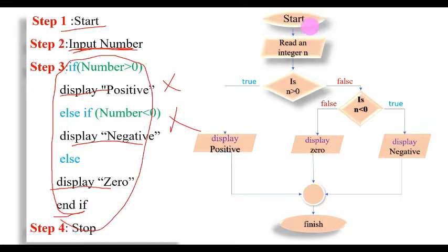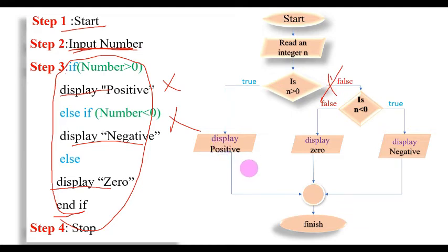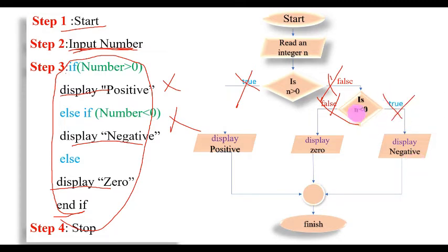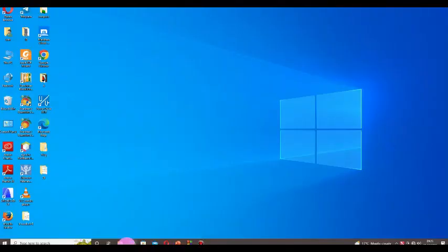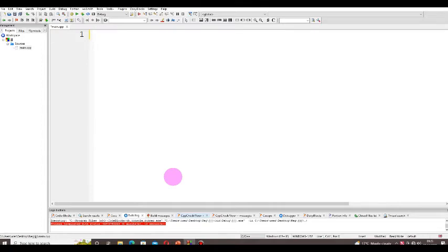The flowchart is a graphical representation of our algorithm. We read an integer n from the keyboard, then check if n is greater than zero. If true, we display that the number is positive. If not, we check if n is less than zero. If true, we display negative. If that condition is also not true, meaning n is neither greater than nor less than zero, then n must be zero, and we display zero. Finally, we terminate the program.